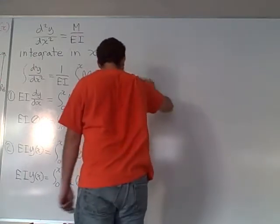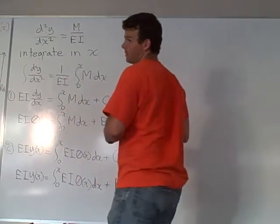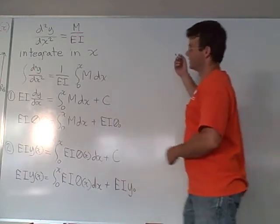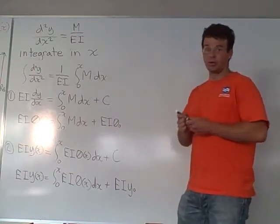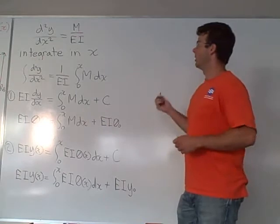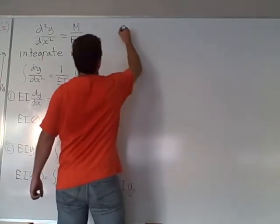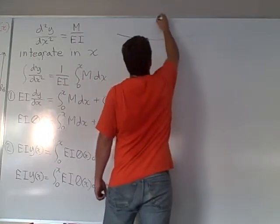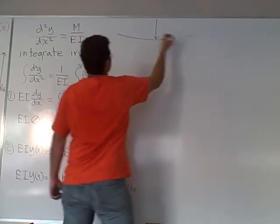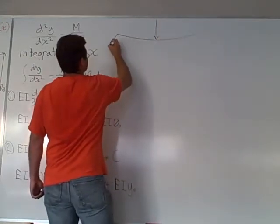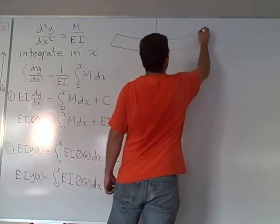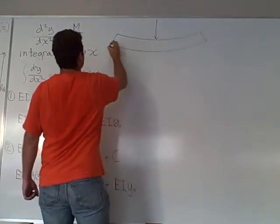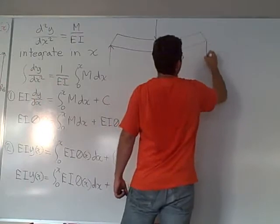We're going to use the beam that we drew up earlier. It's a simply supported beam with a load coming down. Actually, we'll do a constant load - that makes a little more sense to start out with. This will give us a uniform load to work with.